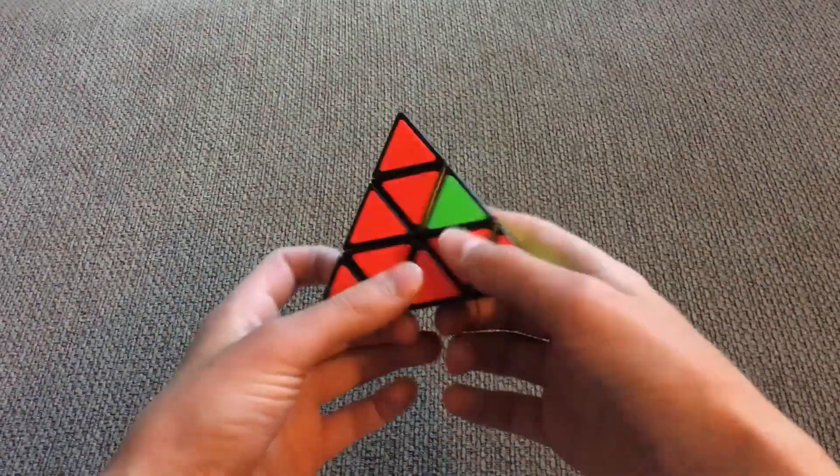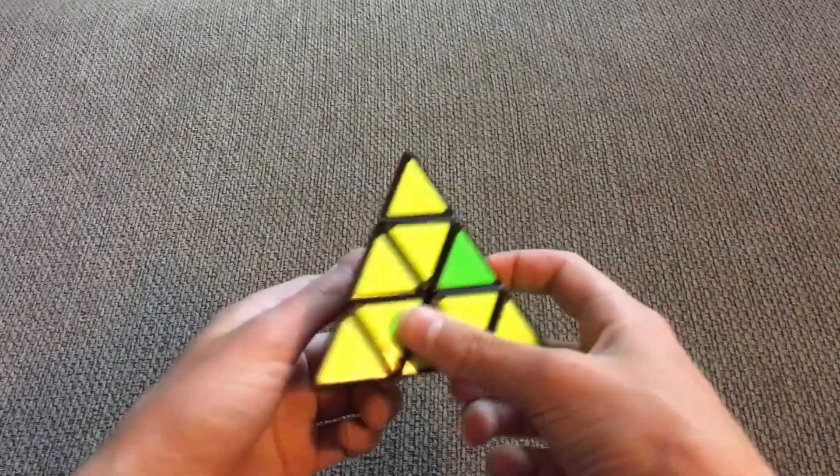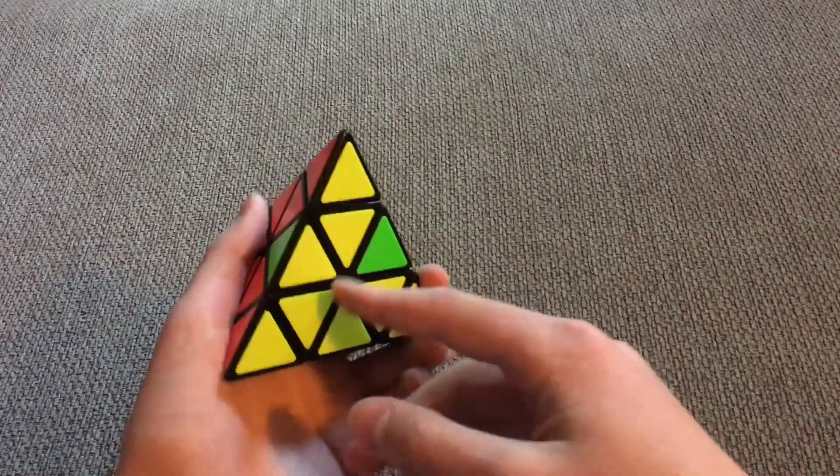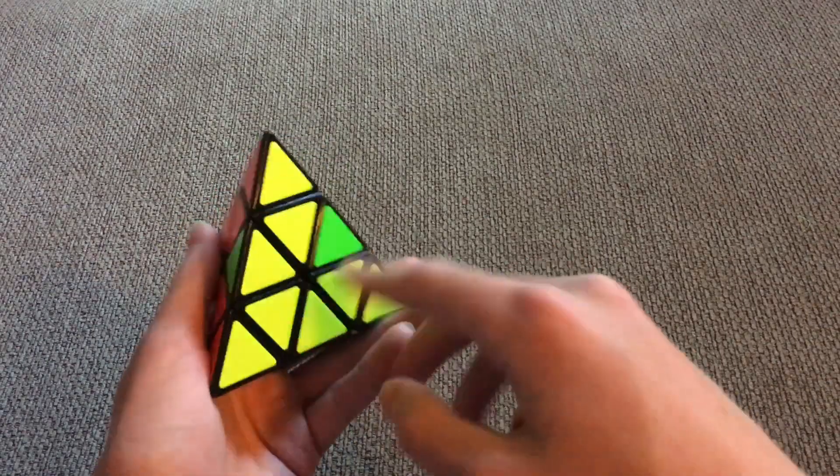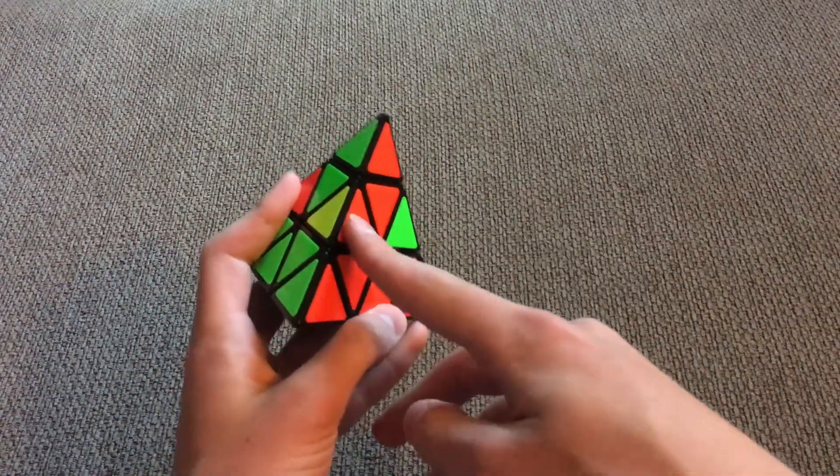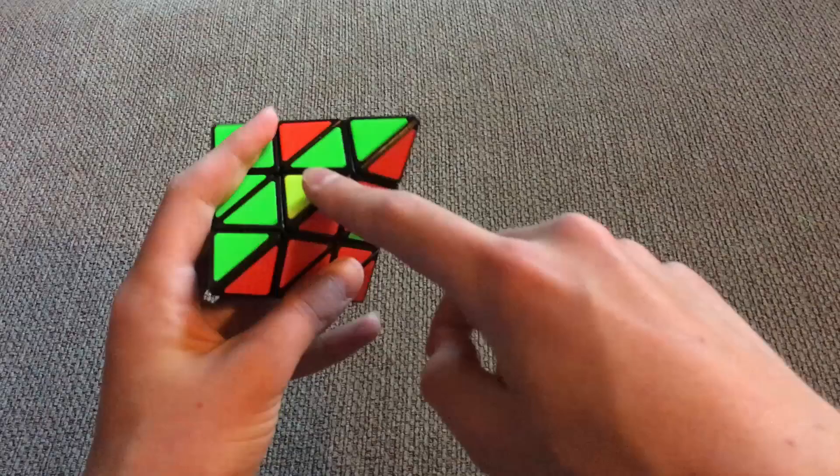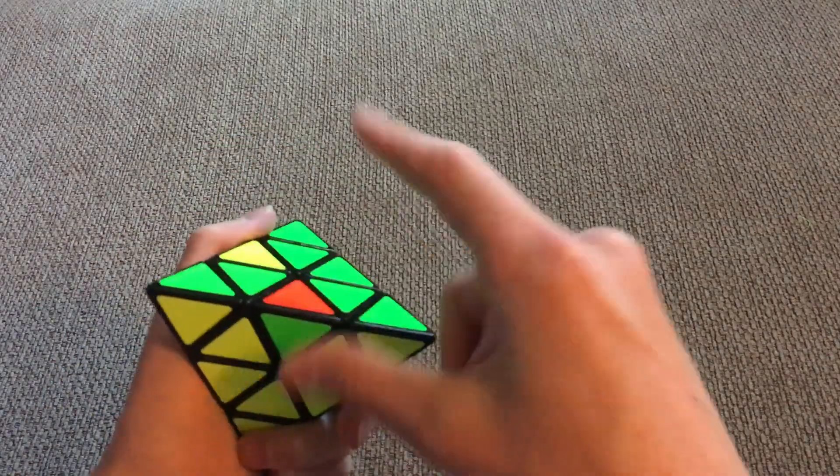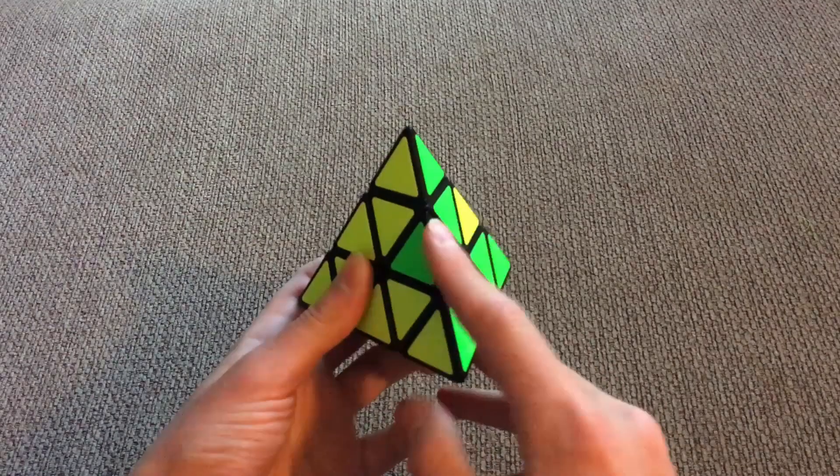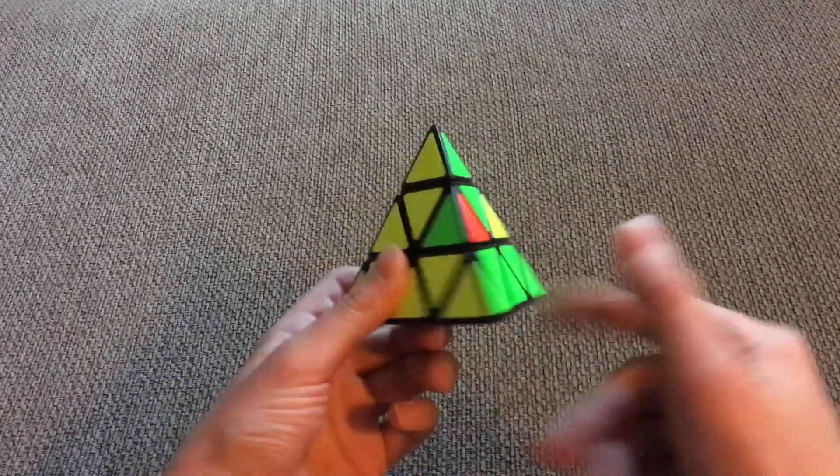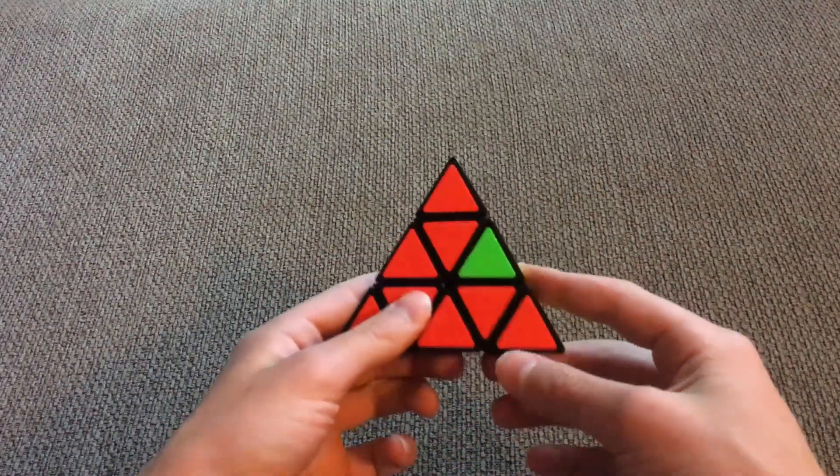Now, a case you can have in the second layer is when you have one color matching on one side, but this one does not. Same here, this one matches on one side, but this one does not. And then this last piece does not match on any side. What you want to do here is you want to hold the non-matching piece, that doesn't match on either side, and hold it to the back.